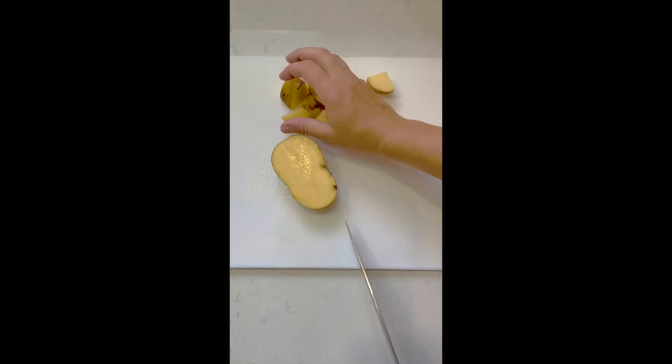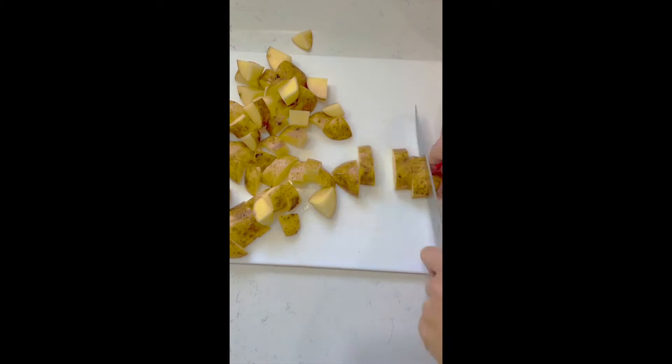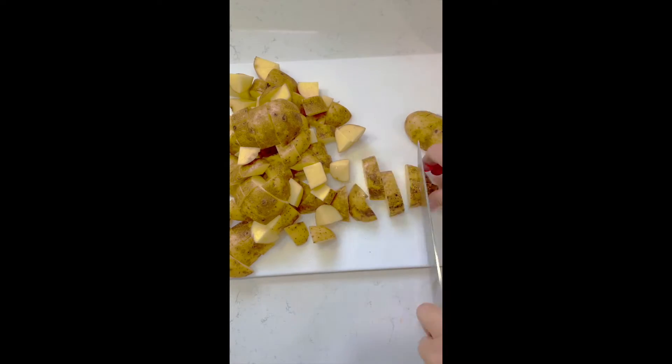You want to wash them, no need to peel them. The skins look beautiful in the salad. Cut them into roughly three-quarter inch to one inch pieces. Make sure they're pretty even as much as you can.